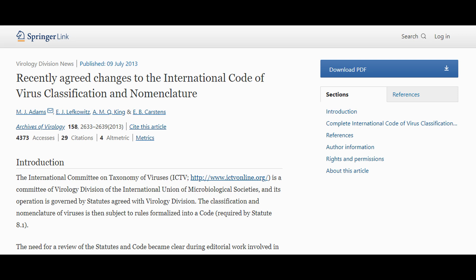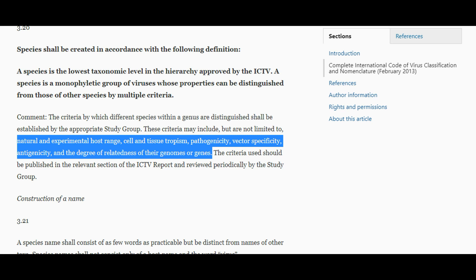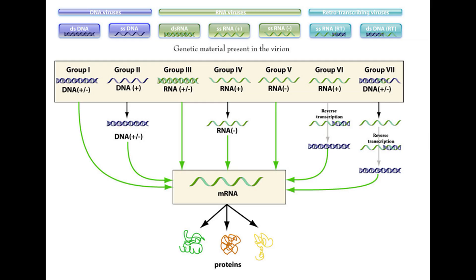The broadest encompassing categories are given by the Baltimore Classification System, devised by Nobel Prize-winning biologist David Baltimore. These do not represent viral taxa, but are quite useful for understanding how different viruses can be from each other. The system focuses on four bivariable traits: whether the genome is RNA or DNA; whether it is double or single-stranded; if single-stranded RNA, whether it is positive-sense or antisense; and whether the virus uses a reverse transcriptase enzyme or not.